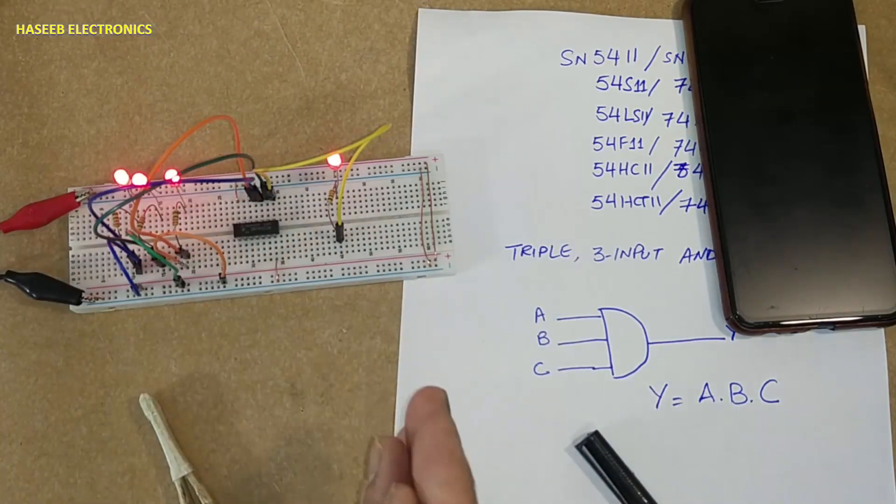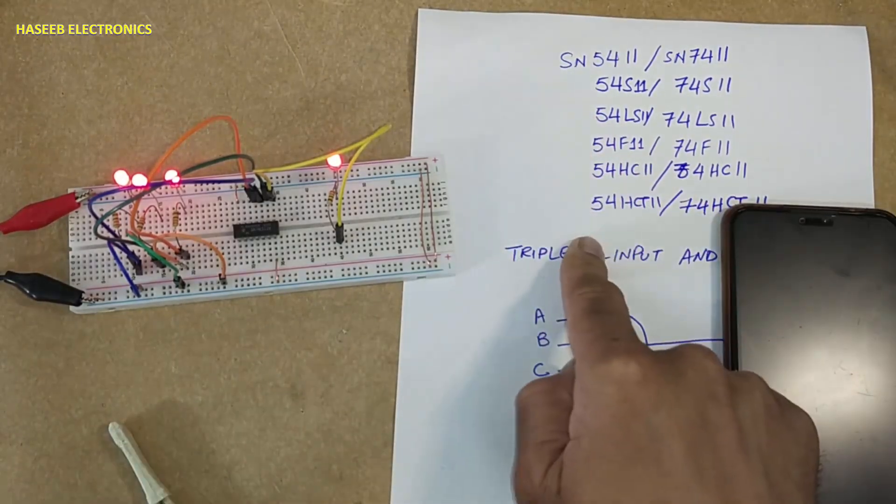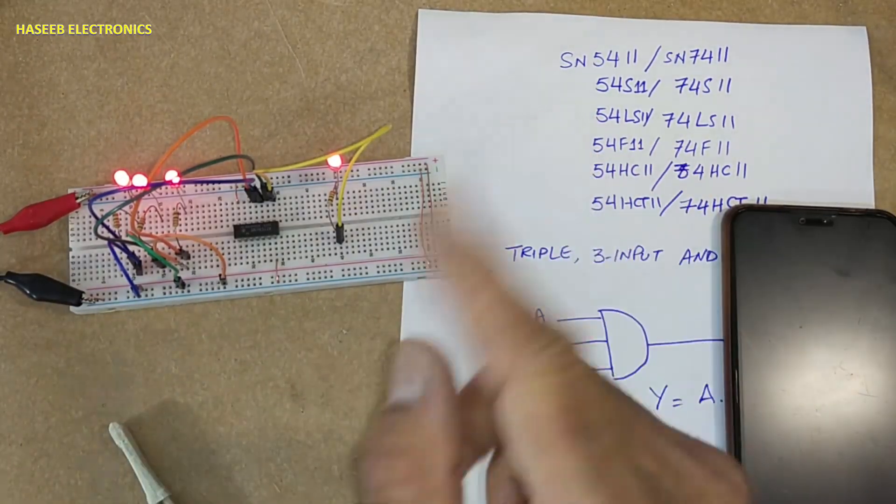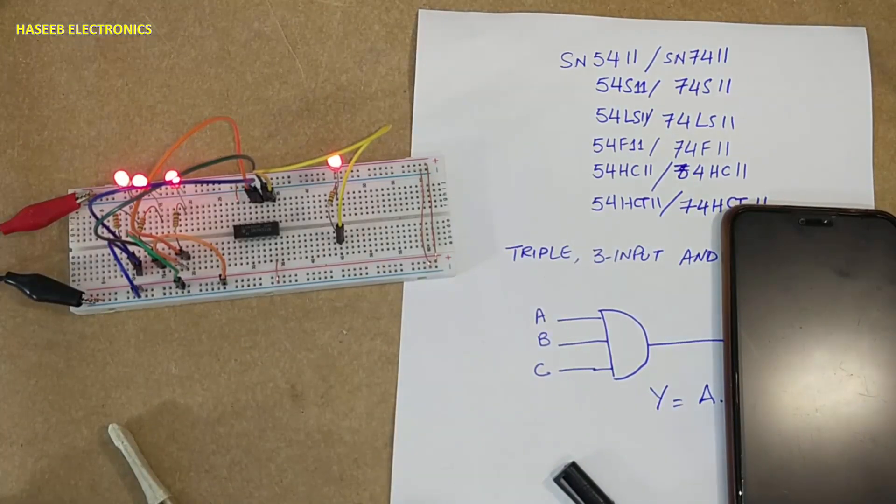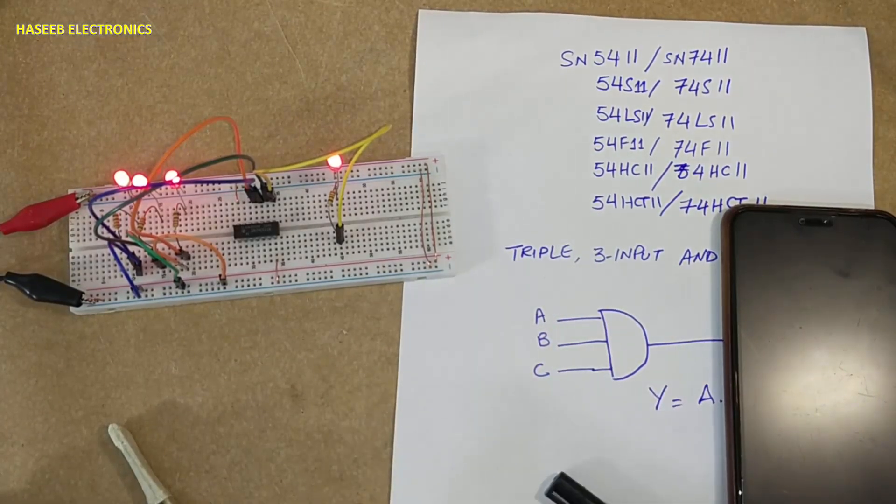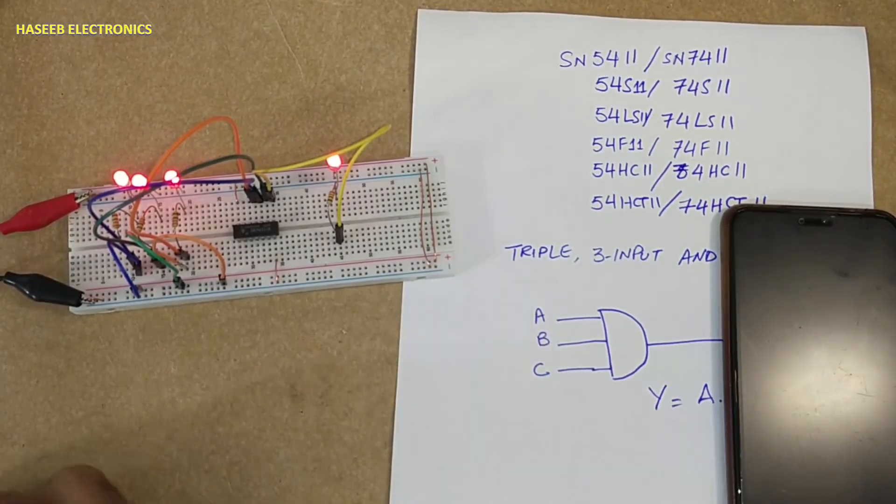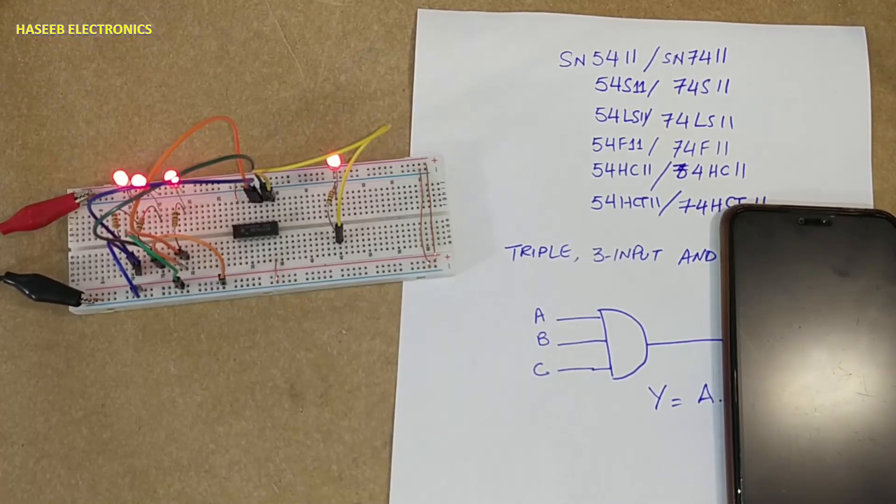So in this way we can verify the function of this IC, 7411 or 5411. If you enjoyed this video, give a thumbs up. If you have any questions, please write in the comments. Thanks for watching. Assalamualaikum warahmatullahi wabarakatuh.